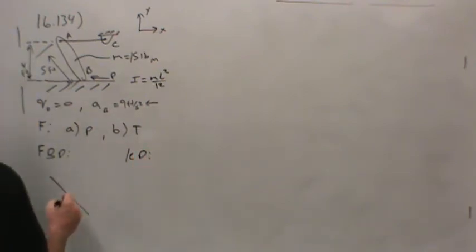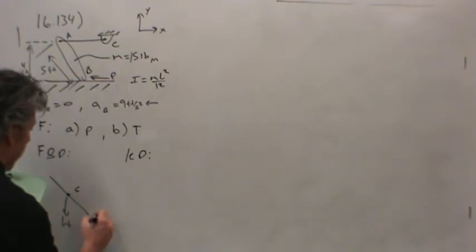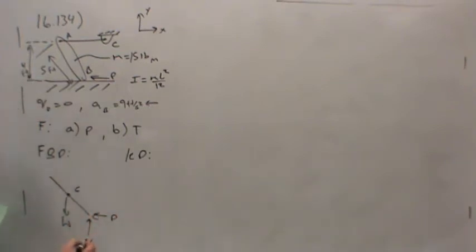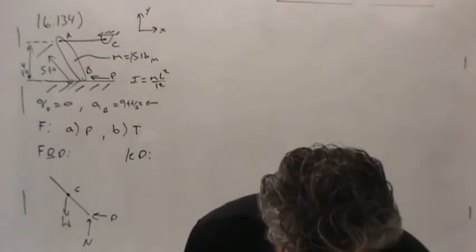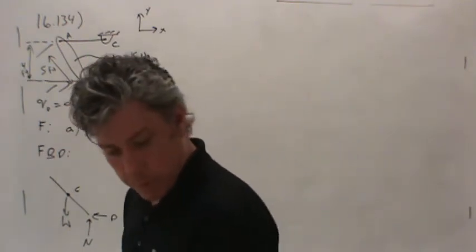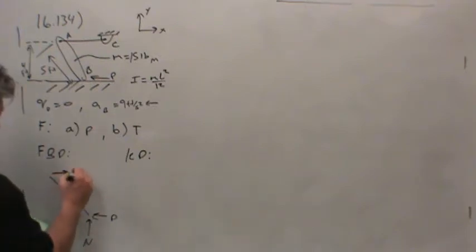Here's the rod on the free body diagram. The weight will act in the center of the rod at point G. The applied force P will act at B, and there will also have to be a normal force from the floor. The floor is frictionless. And then there's a tension force T applied to the end of the rod at A.